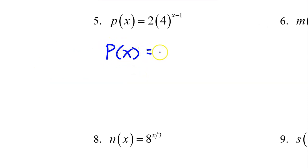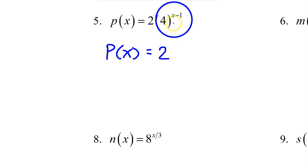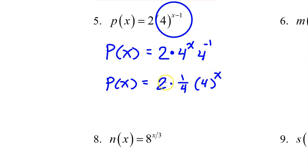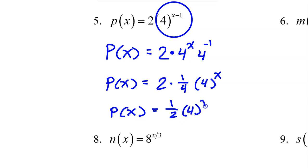Number 5: p of x — I'll bring down the 2 unchanged. It is the 4 to the x minus 1 power part that needs to be rewritten. So this becomes 2 times 4 to the x power times 4 to the negative 1 power. 4 to the negative 1 power is 1 fourth. So p of x equals 2 times 1 fourth times 4 to the x power. 2 times 1 fourth reduces to 1 half, giving us 1 half times 4 to the x power.